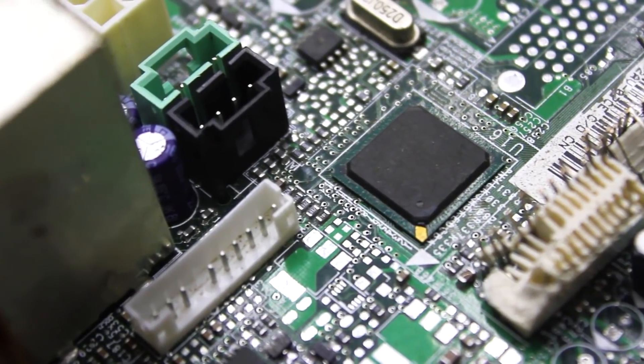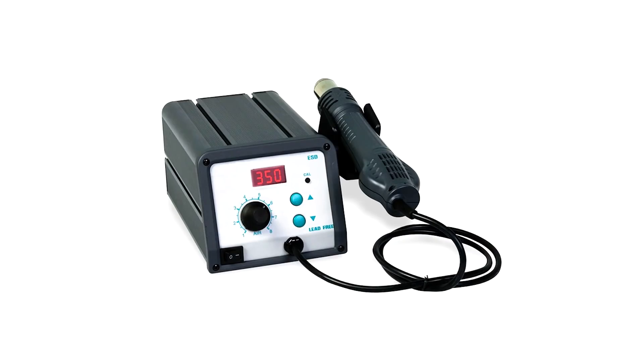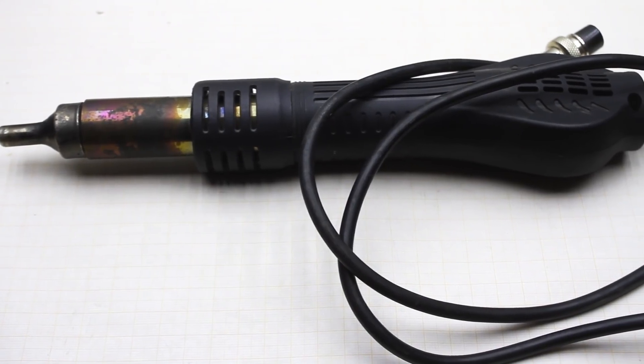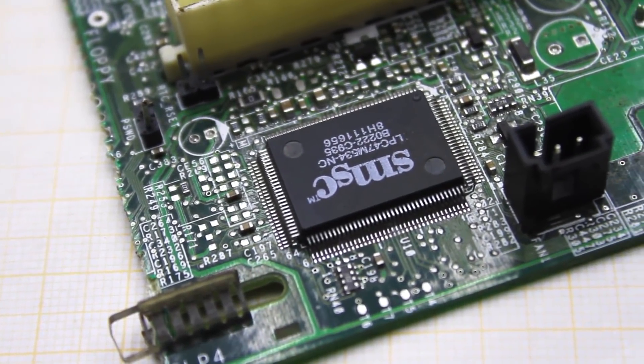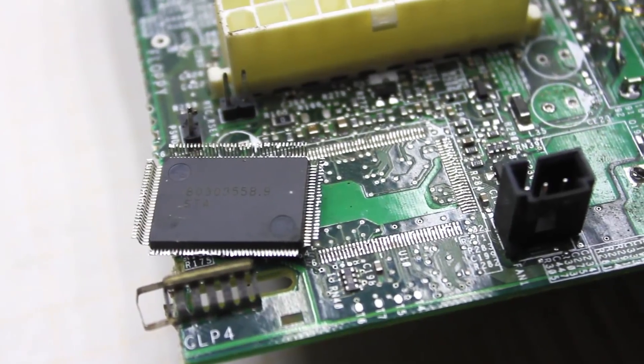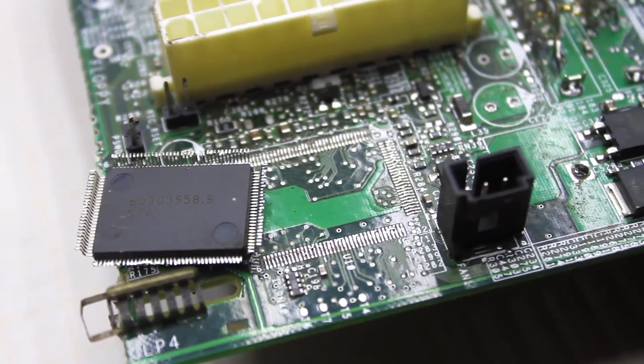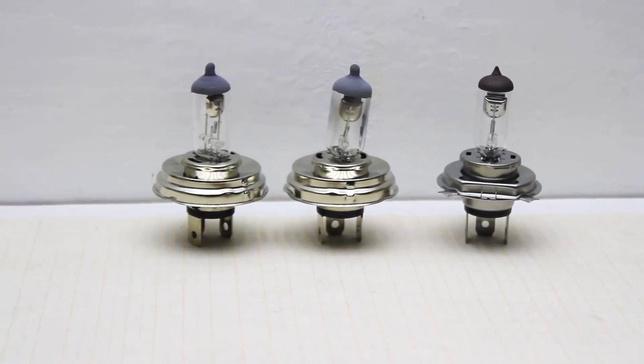In such situations it is advisable to use a hot air soldering station. But what if it isn't at hand? In fact, any chips from any PCB can be dismounted very simply, and for this you literally don't need anything other than the usual halogen lamp from the car.